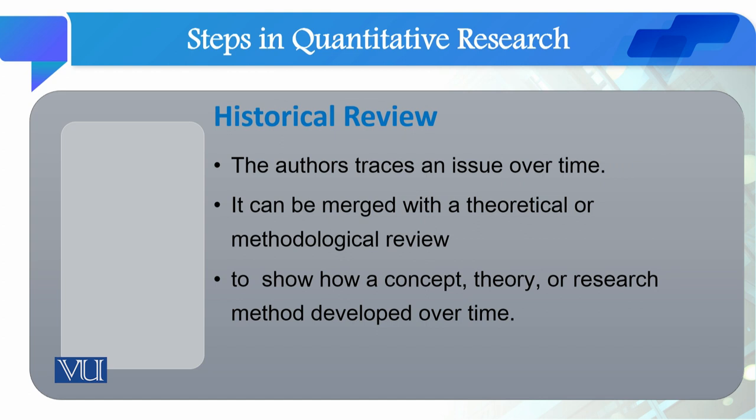Historical review is a literature review in which the researcher traces a social problem or social issue over a period of time — through the 50s, 60s, 70s, 90s and further — studying how the phenomenon has changed. For example, crime rate, juvenile delinquency, or mechanisms to control crime — how these approaches developed over the period of time and how they changed.